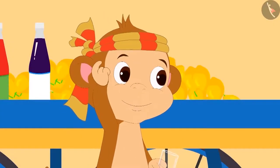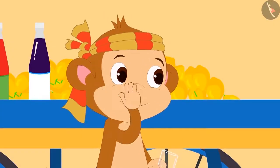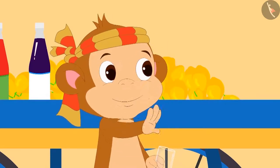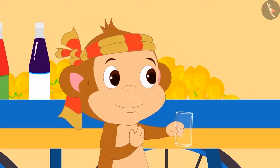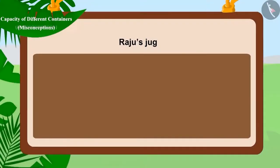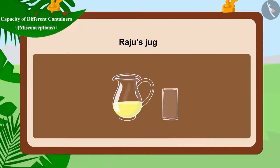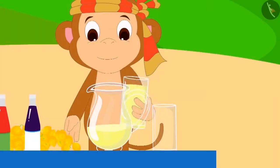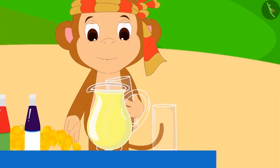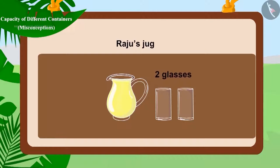Babban is very smart. He made a plan. He told Raju and Pinky that he would completely fill both their jugs. First, he started filling Raju's jug. Can you guess how many glasses of lemonade are needed to fill Raju's jug? That's right! Raju's jug needed two glasses of lemonade to fill.